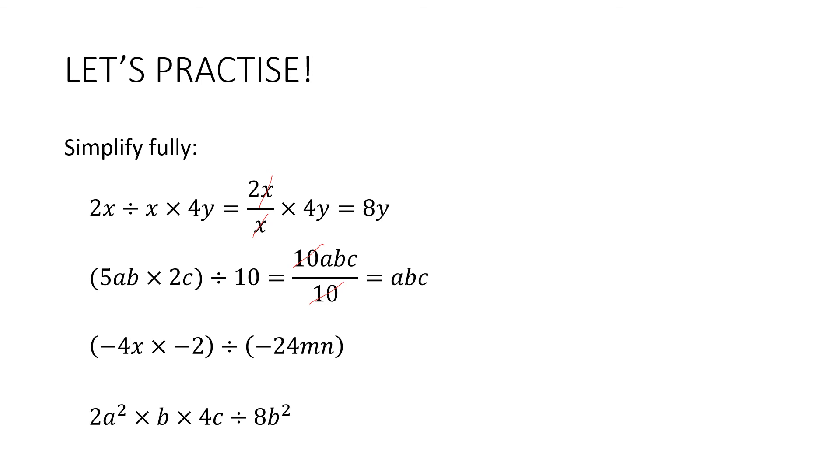The third question. So we've got the division here of two bracketed terms. So this one's going to go on the numerator, and this one's going to go on the denominator. I'm going to tidy this one up first. So I've got a negative times a negative, which is a positive, which we don't write. 4 times 2, which is 8x. So I've got 8x over negative 24mn. And the only thing that's going to cancel here is the 8. 8 is going to go into 24 three times, which leaves me with x divided by negative 3mn. And remember, the negative sign has to float up.